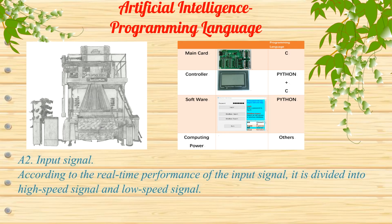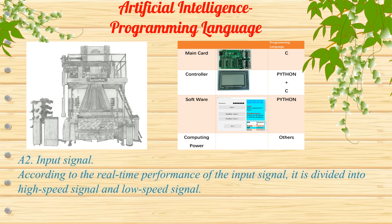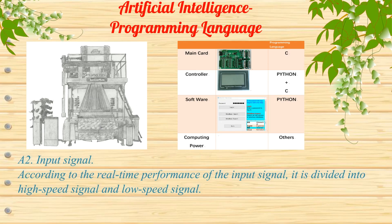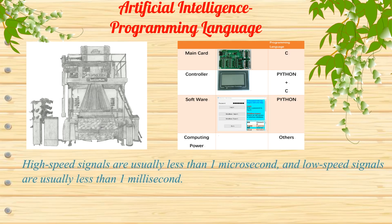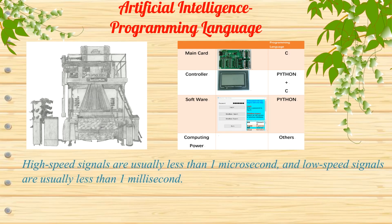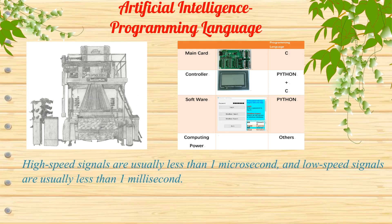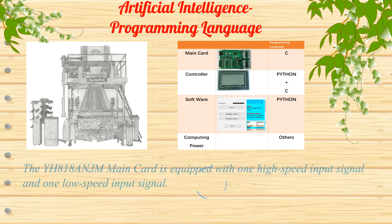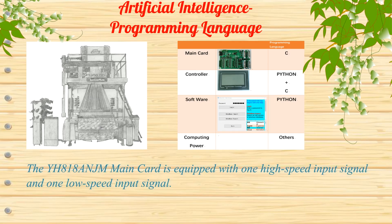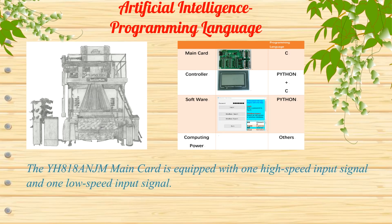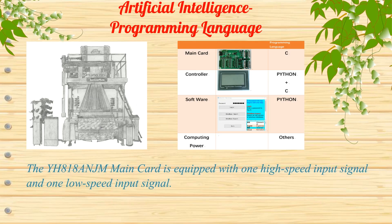2. Input signals. According to real-time performance, input signals are divided into high-speed and low-speed signals. High-speed signals are usually less than 1 microsecond, and low-speed signals are usually less than 1 millisecond. The YH-818-ANJM main card is equipped with 1 high-speed input signal and 1 low-speed input signal.